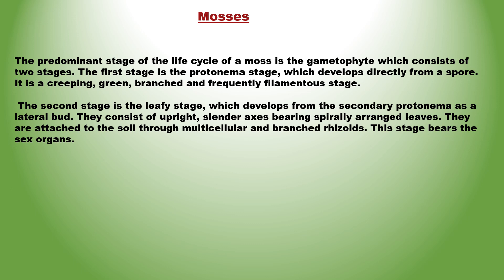Leafy stage यह second stage है, जो secondary Protonema से lateral bud के रूप में develop होती है। इनमें upright, slender axis होता है, जिस पर पत्तियाँ spirally लगी होती हैं। यह मिट्टी से rhizoids द्वारा जुड़े रहते हैं। Rhizoids, multicellular और branched होते हैं।